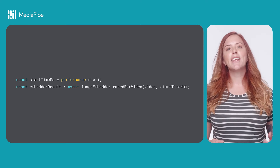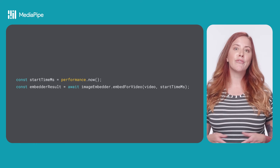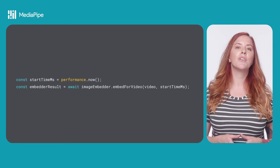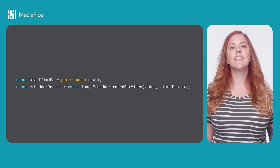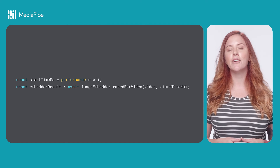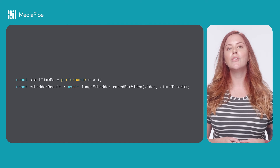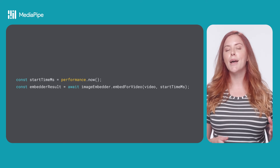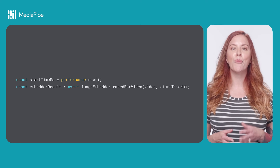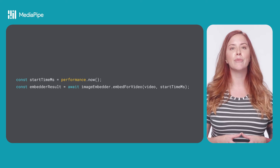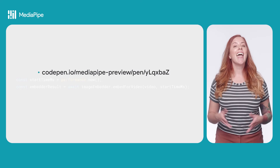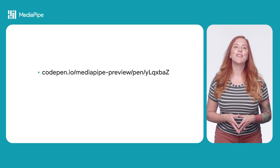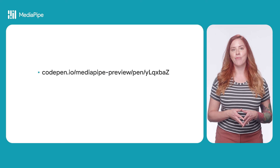To get the embeddings for frames of a video, get the current time using performance dot now. Then, get the image embedder result using the image embedder dot embed for video method, passing your video element and the current time. And that's it — with this code, you can get started with image embedding in your own web app.